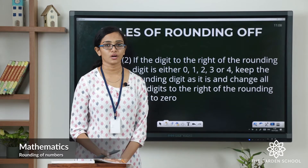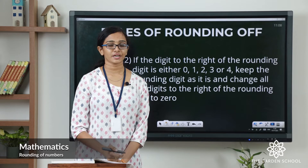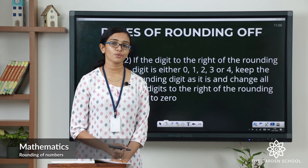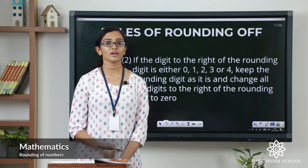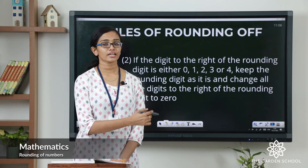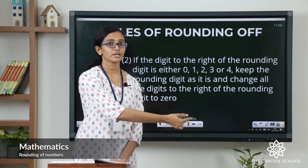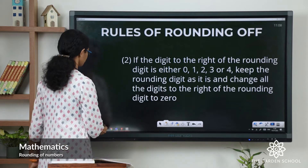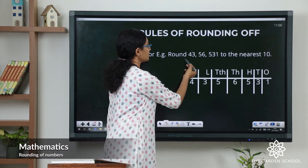If you are rounding it off to the nearest hundred, the rounding digit will be the hundreds digit, and if it is to the nearest thousand, the rounding digit will be the thousands digit, and so on. Now the next step is to check the digit to the right of the rounding digit. If this digit is less than 5 — that is, if it is either 0, 1, 2, 3, or 4 — we have to keep the rounding digit as it is and change all the digits to the right of it to zeros.